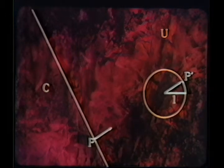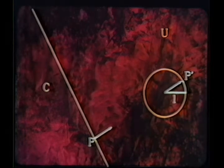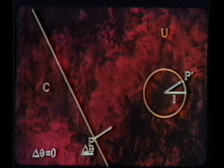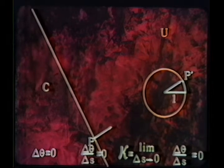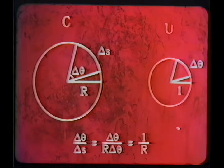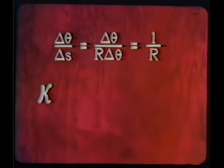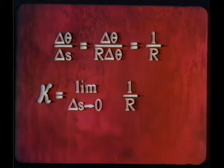For example, if C is a straight line, the image P prime is the same for all points on C. So delta theta equals zero, and kappa equals zero. If C is a circle with radius R, the arc delta S is of length R delta theta. So delta theta divided by R delta theta is equal to 1 divided by R. And the curvature kappa is equal to 1 over R at every point.